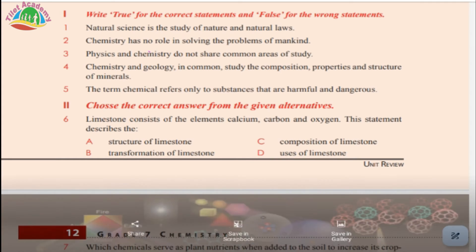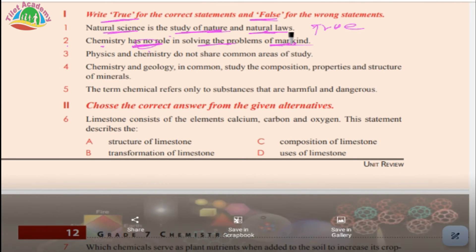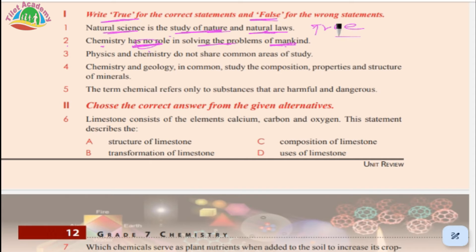Write true or false. Number one: Natural science is the study of nature and natural law. That's true. Number two: Chemistry has no role in solving problems of mankind. That's false.